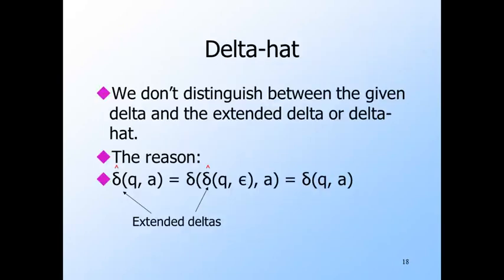As mentioned, the extended delta sometimes is given a hat. However, we really don't need to distinguish the two deltas because they agree on single symbols. If we want the extended delta for a state q and a string consisting of one symbol a, we treat that string as the empty string followed by symbol a. Then we compute delta-hat of (q, epsilon), which by the basis rule is q itself. Thus, delta-hat(q, a) is the same state as delta(q, a). In fact, on the previous slide I just went to the table and looked it up as if it were delta(B, 0) — and now we see they are in fact the same, so no harm, no foul.